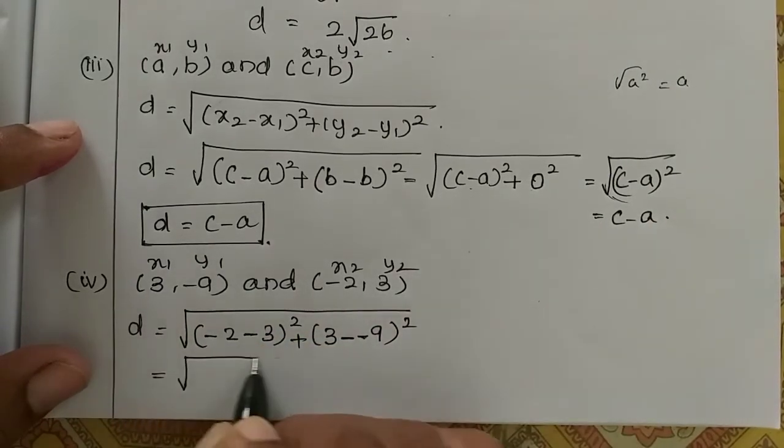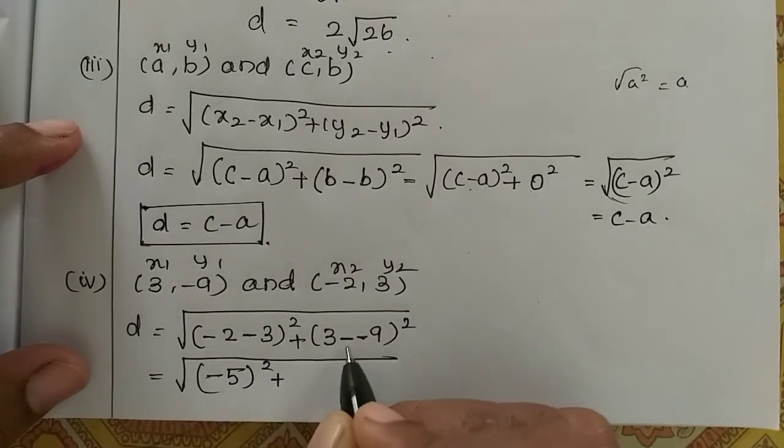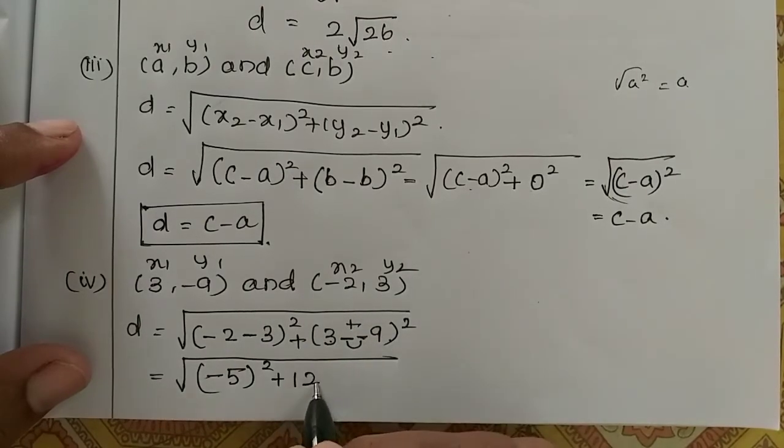So minus 2 minus 3, the same symbol add means negative. So minus 5 the whole square. Plus minus into minus is plus. So 3 plus 9, 12. So 12 square.